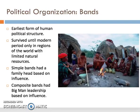Bands are the earliest form of human political structure. They've survived until the modern period only in regions of the world with limited natural resources. Simple bands had a family head based on influence, while composite bands had big men leadership based on influence. Big men are informal political leaders who gain influence through skill, persuasiveness, and generosity. Conflicts within bands are minimal and are solved informally. Groups are often so small that the entire group will sit and hash out a problem until consensus is reached. Bands are integrated by kinship and marriage rather than politics. Political life is embedded within the wider social structure, particularly kinship.